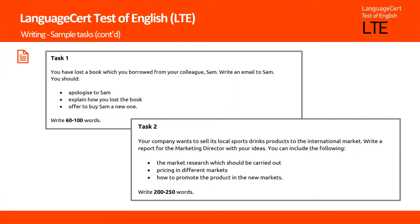Task two asks candidates to imagine their company wants to sell its local sports drinks products to the international market. They need to write to the marketing director with their ideas. They can include the following points: the market research which should be carried out, pricing in different markets, and how to promote the product in the new markets. Candidates are required to produce 200 to 250 words.